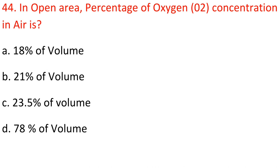Question 44: In open area, what is the percentage of oxygen (O2) concentration in air? A. 18% by volume. B. 21% by volume. C. 23.5% by volume. D. 78% by volume. Answer: B. 21% by volume.